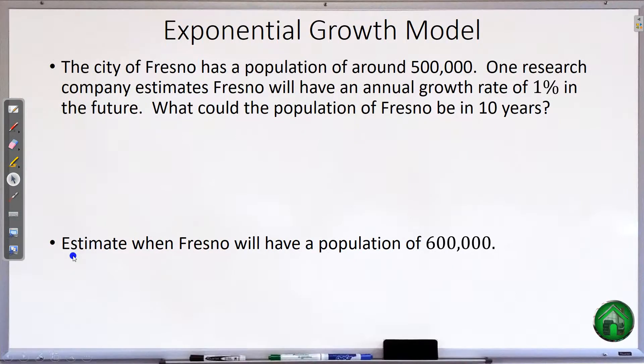So we're going to use that with a few application problems now with growth and decay. So first, our growth model. The city of Fresno has a population of around 500,000. One research company estimates Fresno will have an annual growth rate of 1%. What could the population be in 10 years? So our numbers here, right now we have 500,000. That's going to be our a value because that's what we're starting with. Our growth rate of 1%, that is going to give us our b once we add 1 to it. So our equation is going to be y equals our beginning value 500,000 times, now my b value. The b value is equal to 1 plus the interest rate. So there's our rate. Our growth rate is 1%. Remember, turn that into a decimal. That is 0.01.